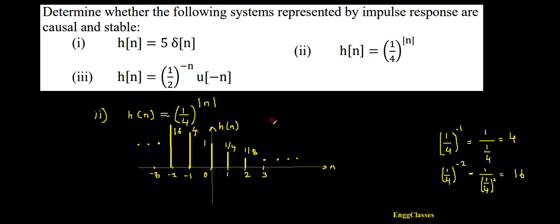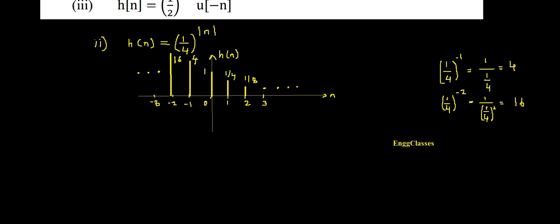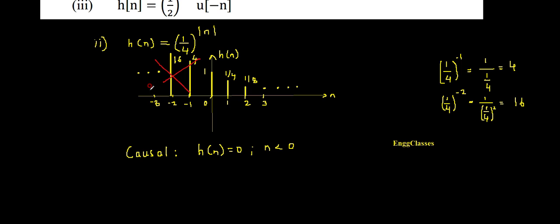Now let me test this system for causality. The condition for a system to be causal is that its impulse response h(n) must be zero for n less than zero. Looking at the graph, we do have signal values in the negative-n region. This violates the condition, so the system is non-causal.